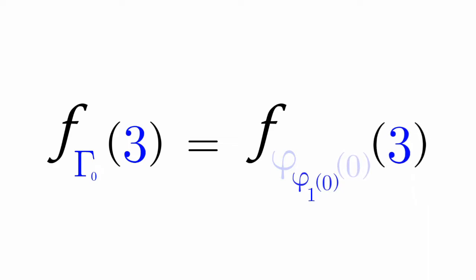Phi one of zero is equal to epsilon zero. And epsilon nought of three, as we've known, expands to omega cubed. And then finally, we have phi omega cubed. Now this is extremely big.